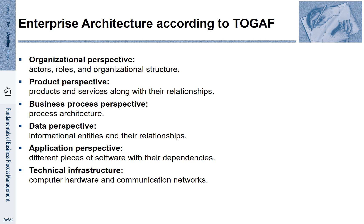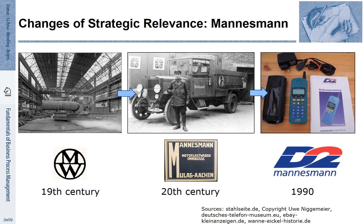These are the underlying foundations upon which business processes operate. So why do we need to manage process architecture at all? Why is process identification important? Part of the answer is that the strategic relevance of different processes in a company changes over time. You may not be able to observe such changes in short periods, but over longer periods of time these changes can be very drastic.